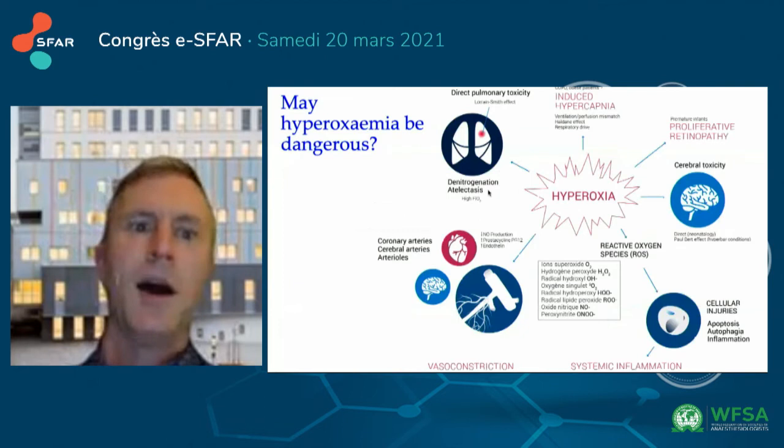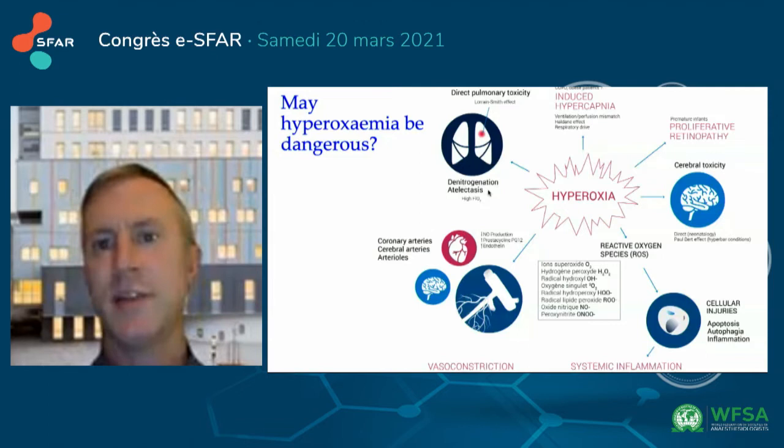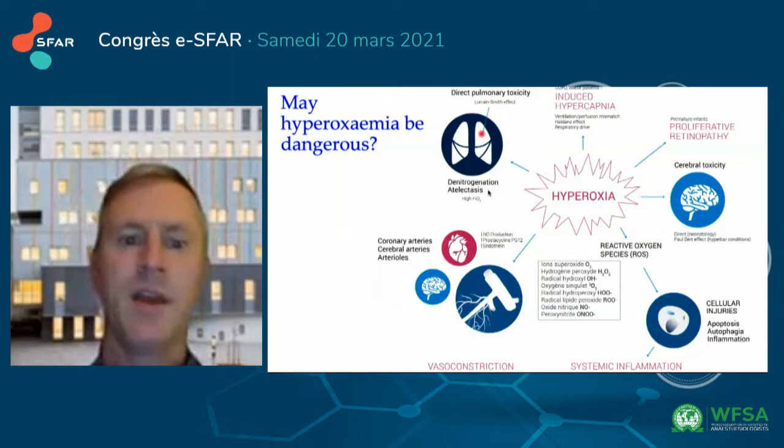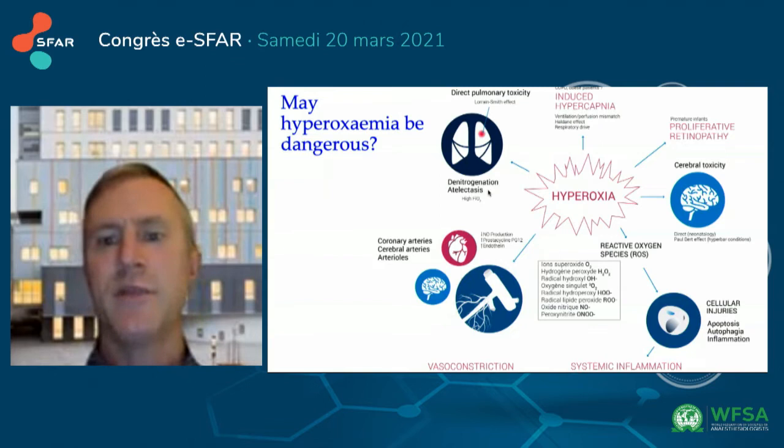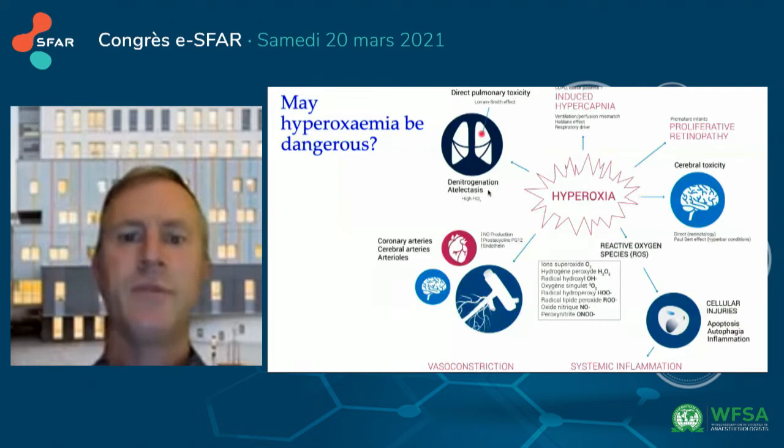The definition of hyperoxemia is very variable in the literature — it goes from 100 to nearly 500 millimeters of mercury. May hyperoxemia be dangerous? Yes, the answer is yes. We know that hyperoxia may provide vasoconstriction, systemic inflammation, proliferative retinopathy, and the production of large amounts of reactive oxygen species.